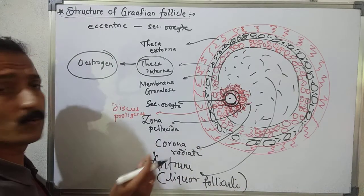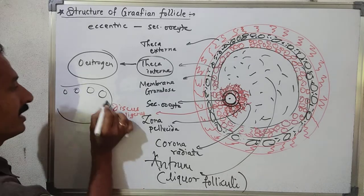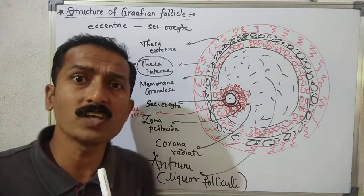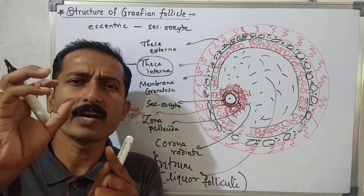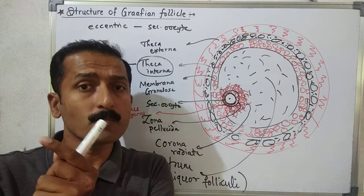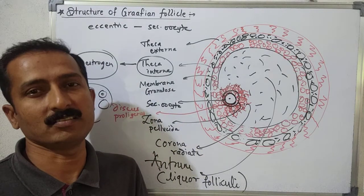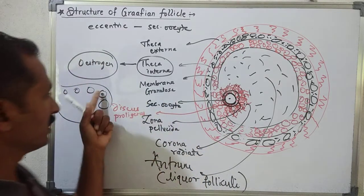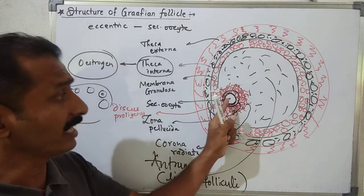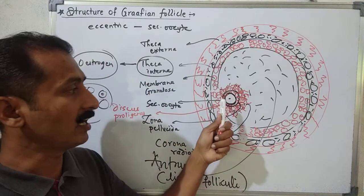The secondary oocyte originates from the primary oocyte. In the tertiary follicle, the primary oocyte undergoes meiosis and produces two bodies — one small polar body that degenerates, and the other becomes the secondary oocyte. This secondary oocyte in the eccentric position is essentially the future haploid ovum.